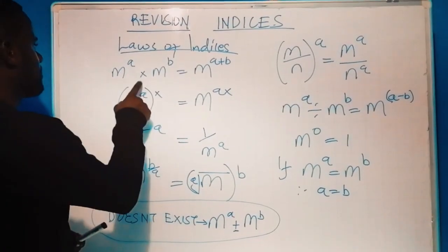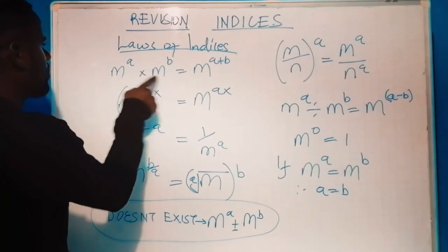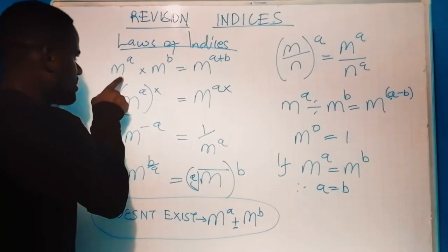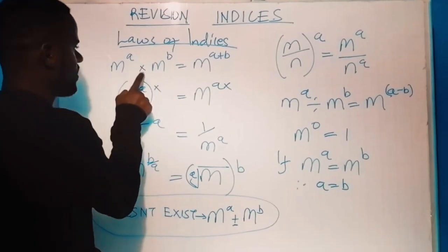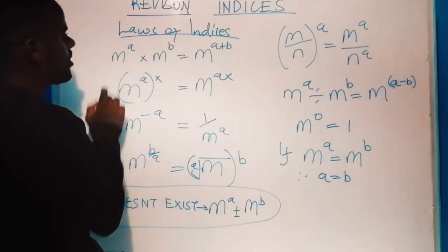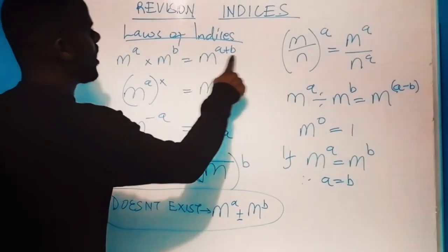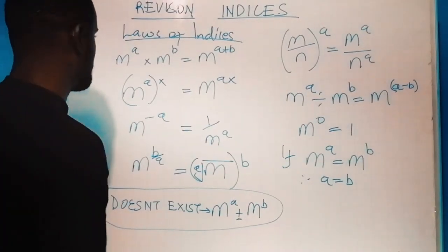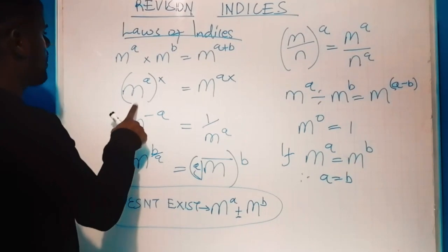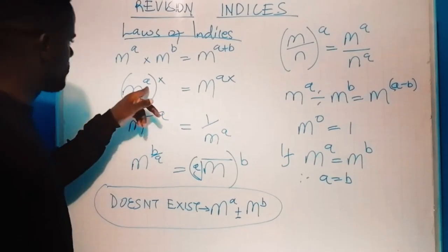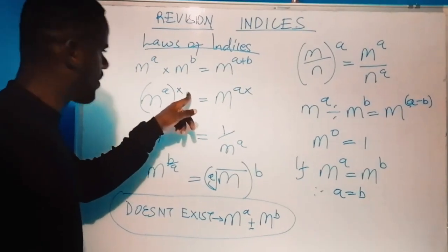The first law: m raised to power a times m raised to power b — remember, if the bases are common and the powers are different, with a multiplication sign in between, it is the same as taking the base and adding the powers together.